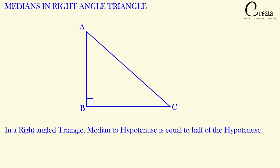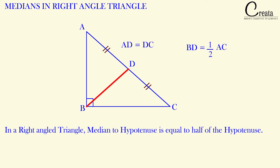This property talks about the median connecting with the hypotenuse. Here this is the hypotenuse, so this is the median we are talking about. A median is a line segment which joins the vertex with the midpoint of the opposite side. Here D is the midpoint of hypotenuse AC. As per this property, this median will be equal to half of the hypotenuse. Since D is the midpoint, AD equals DC, and both equal BD. So AD equals DC equals BD. Note that this property is only for right angle triangles — do not confuse it with any other triangle.